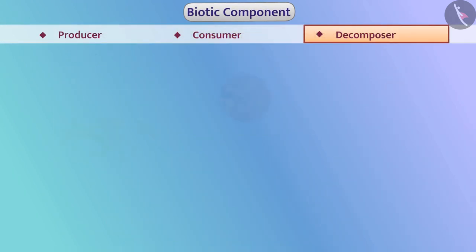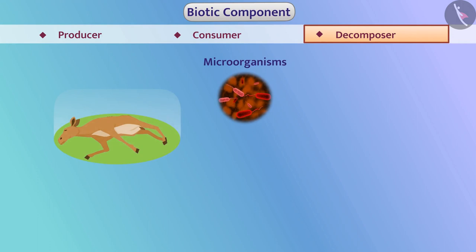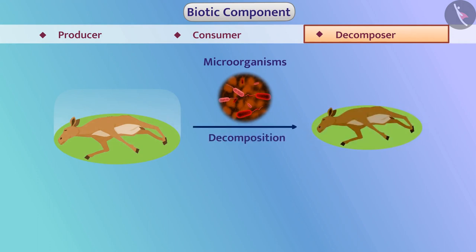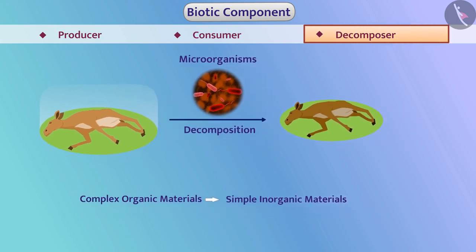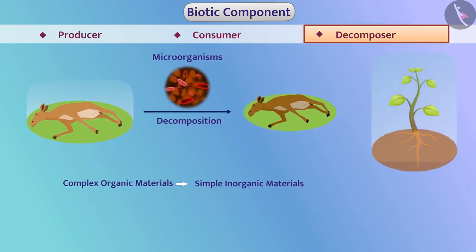Many microorganisms such as bacteria and fungi decompose dead remains of organisms and convert these complex organic materials into simple inorganic materials. Such organisms are called decomposers. These substances are then absorbed by plants. Decomposers play a vital role in the cycling of nutrients.